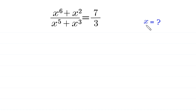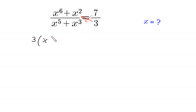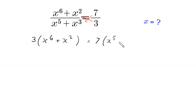So, let us start by using cross multiplication. We multiply this 3 by this expression x to the power 6 plus x squared, and we multiply this 7 by this expression x to the power 5 plus x cubed. Like this: 3 times x to the power 6 plus x squared is equal to 7 times x to the power 5 plus x cubed.